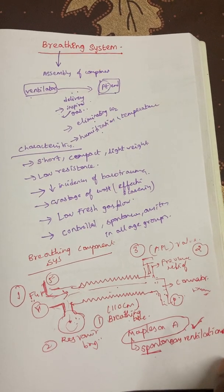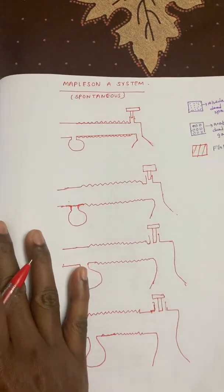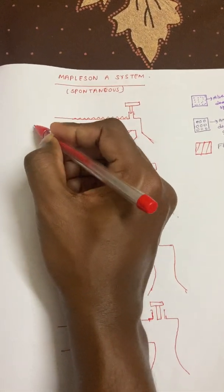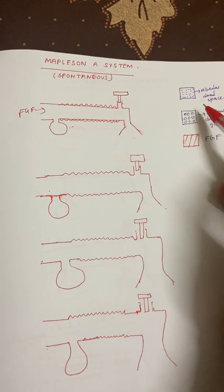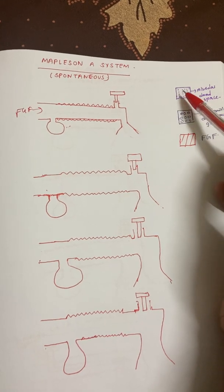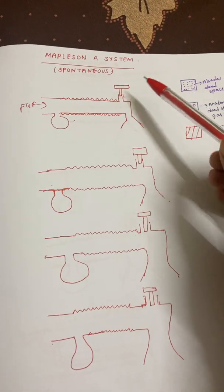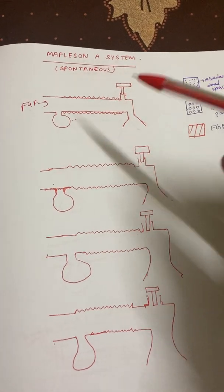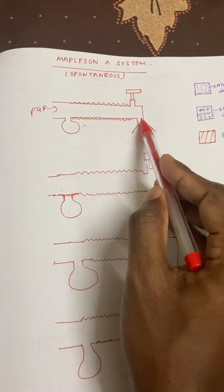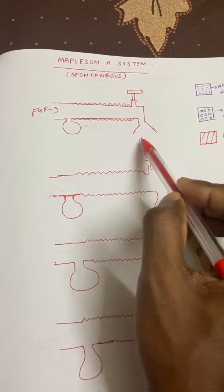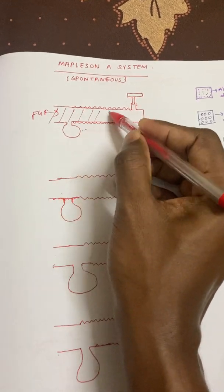Now we will see how Mapleson A helps in spontaneous ventilation and why it is not useful in controlled ventilation. During spontaneous ventilation, the fresh gas flow enters the circuit. The reservoir bag, breathing tubes, APL valve, and patient end are arranged accordingly. The APL valve is open during spontaneous respiration. When the patient tries to take a breath, fresh gas flow comes inside the breathing circuit and the patient inspires the gases, creating a negative pressure so that fresh gas flows toward the patient.